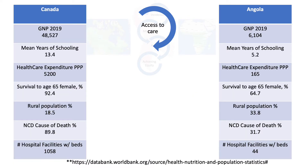Let's dig into this data a little deeper and see if we can explain the difference of 2 to 2.5 times higher rates of incidence of cancer, yet comparable or lower rates of mortality from breast cancer in Canada versus Angola.